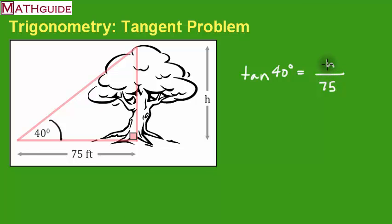Now that we have this set up and we're going to solve for h, I'm going to form a ratio here on the left side. So if I've got two ratios equal to each other, which is a proportion, we cross-multiply. So h times 1 is h, 75 times the tangent of 40 is 75 times the tangent of 40.